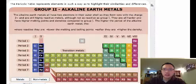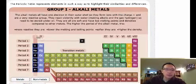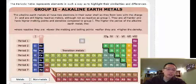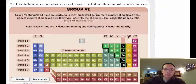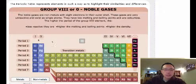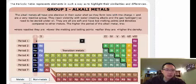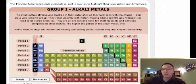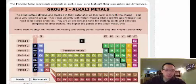These numbers are actually your families. So if you look at this one, this is your first group, second group, or you can say family number 2, 3, 4, 5, 6, 7, and 8. You notice that every time I click on each of these families or groups, it highlights the entire family. Basically, why it's all highlighted is that all of these ones share really similar properties.